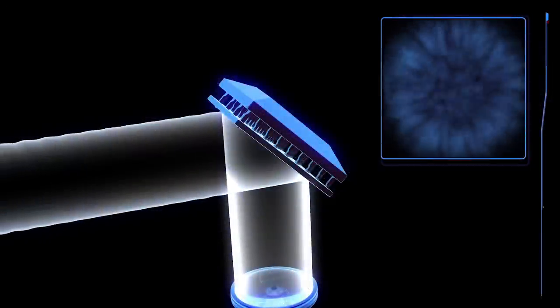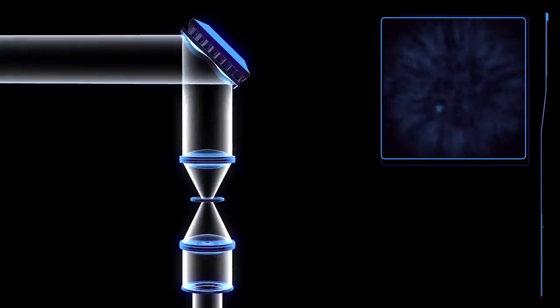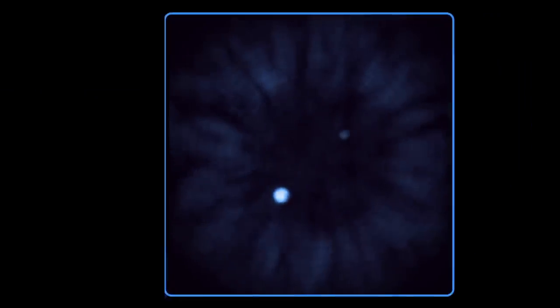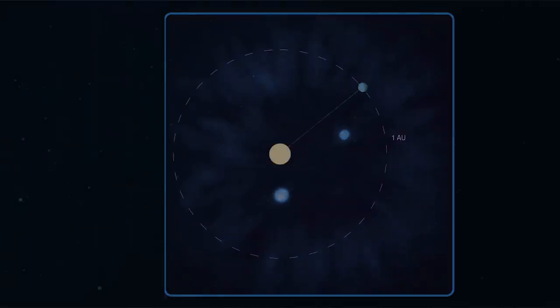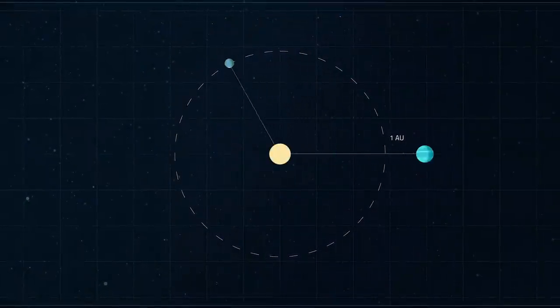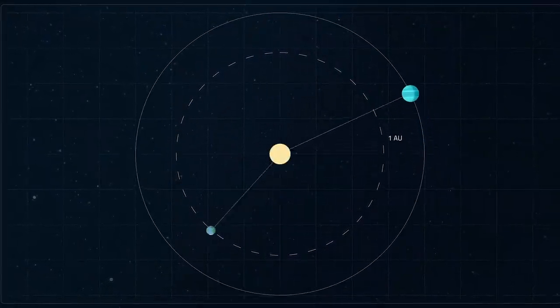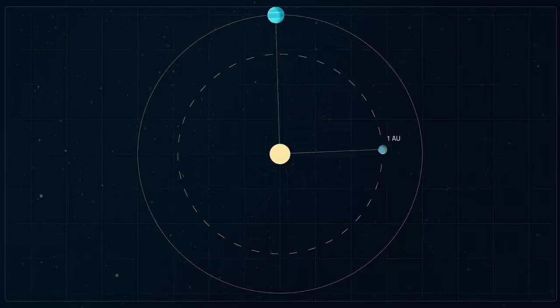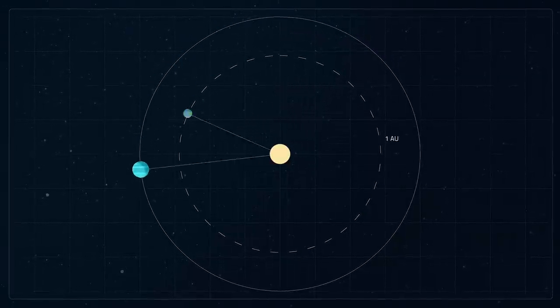To deepen its study of exoplanets, the Roman Space Telescope will house a beyond-state-of-the-art coronagraph that will directly image and analyze Neptune-sized planets in orbits slightly larger than Earth's, a dramatic improvement over current capabilities.